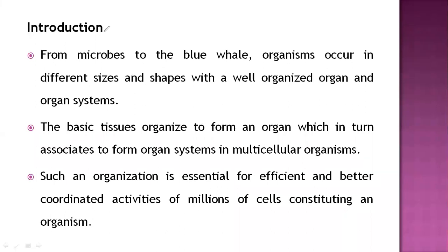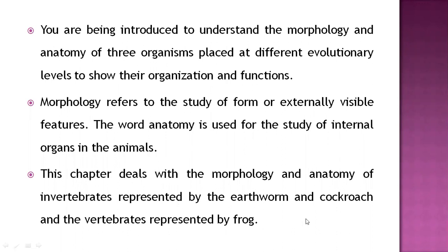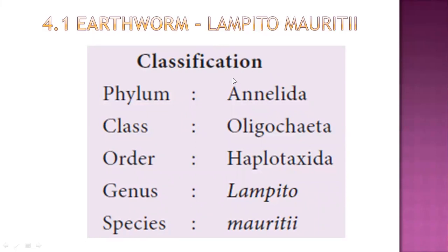In the fourth chapter, we already discussed the introduction. Invertebrates include earthworm and cockroach, and for vertebrates, frog was given. Each question carries four marks, so you can easily get 16 marks. Animal kingdom questions are mostly direct, not indirect, so you can easily get good marks.